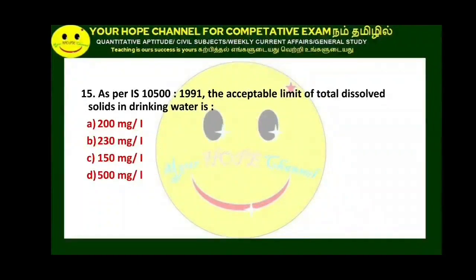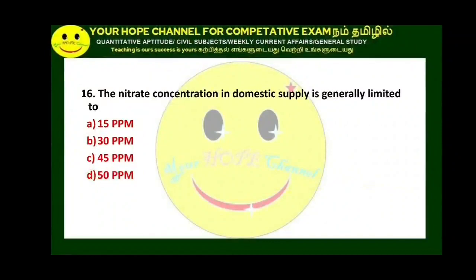As per IS-10500-1991, the acceptable limit of total dissolved solids in drinking water is 500 mg/L and the permissible limit is 2000 mg/L. The present advanced version is IS-10500-2012.